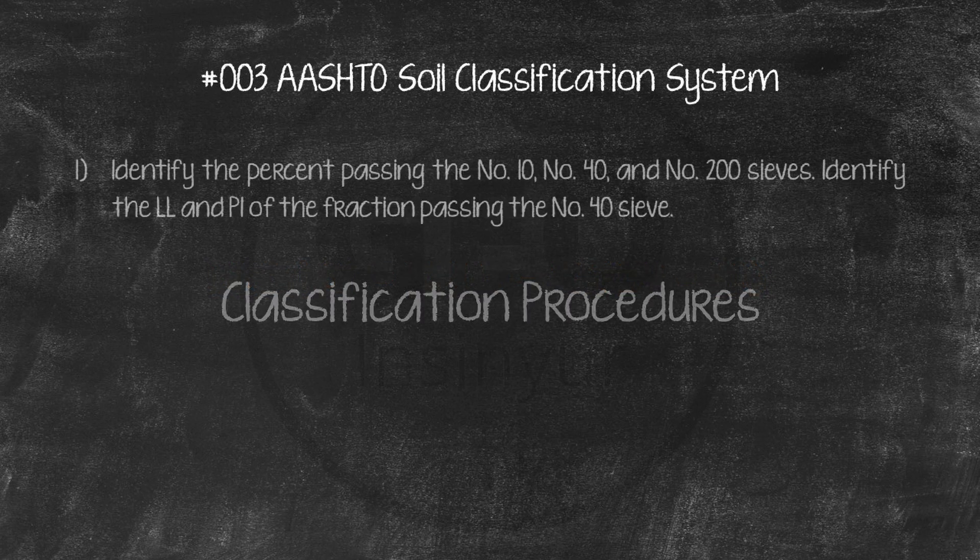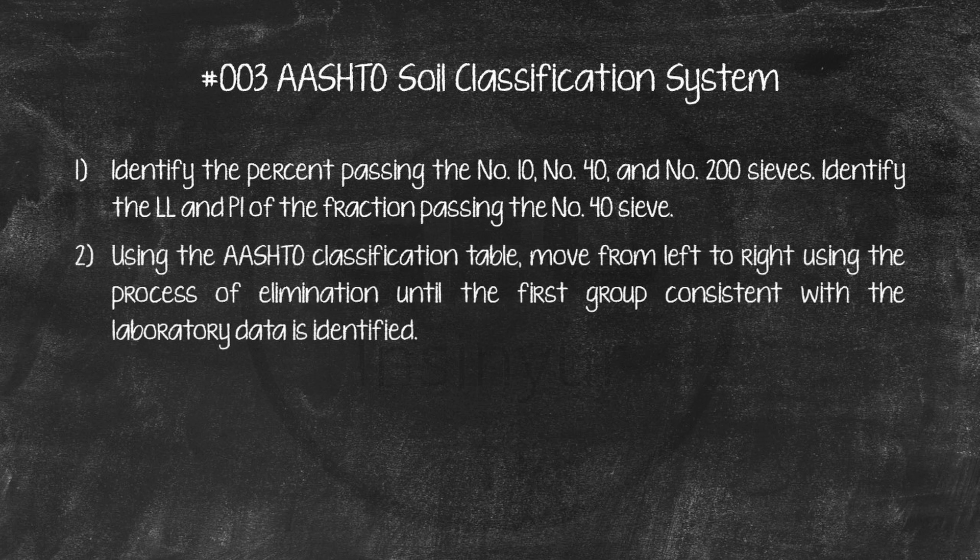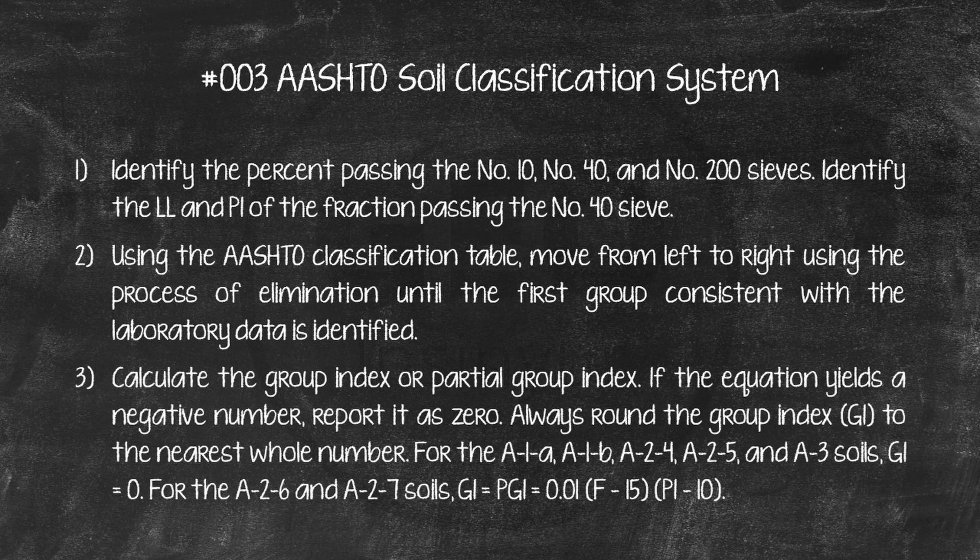Classification Procedures. 1. Identify the percent passing the number 10, number 40, and number 200 sieves. Identify the LL and PI of the fraction passing the number 40 sieve. 2. Using the AASHTO classification table, move from left to right, using the process of elimination, until the first group consistent with the laboratory data is identified. 3. Calculate the group index or partial group index. If the equation yields a negative number, report it as 0. Always round the group index, GI, to the nearest whole number.